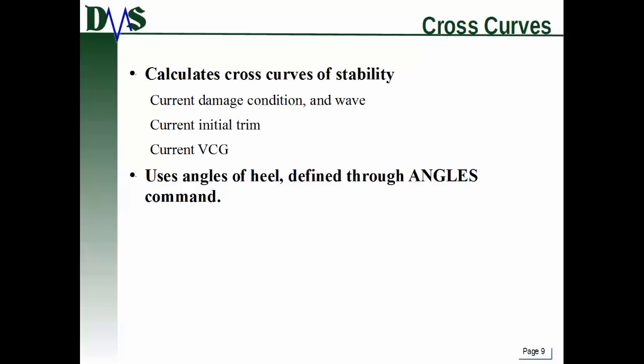GHS can generate cross curves of stability. When you do that, it considers the current damage condition, current waves applied to the ship, the initial trim, and the VCG. You need to define a lot of information with different commands before issuing the cross curves command. One important prerequisite is the angles command, which defines the angles of heel that the cross curves will use — the cross curves command defaults to using whatever angles have already been defined.